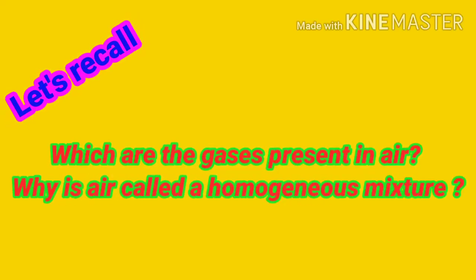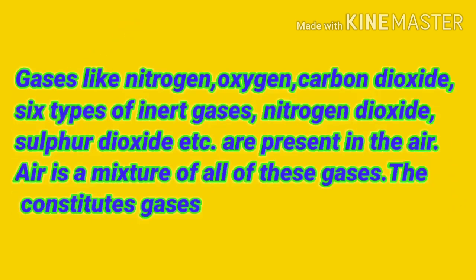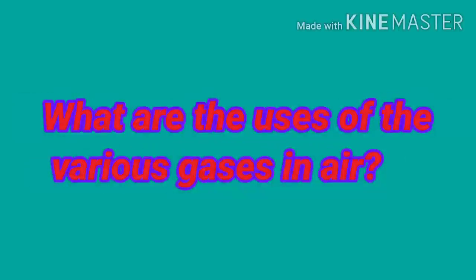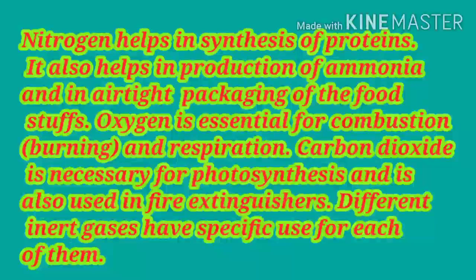Let's recall which gases are present in air and why air is called a homogeneous mixture. Gases like nitrogen, oxygen, carbon dioxide, six types of inert gases, nitrogen dioxide, sulfur dioxide, etc. are present in the air. Air is a mixture of all these gases, and the constituent gases cannot be separated naturally from this mixture — therefore it is called a homogeneous mixture.